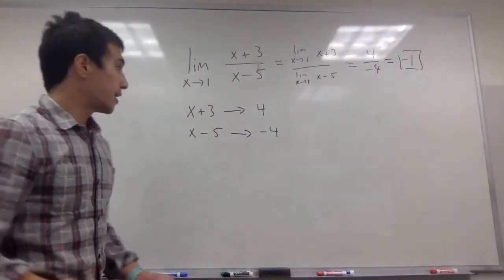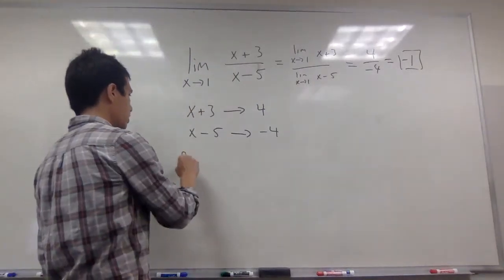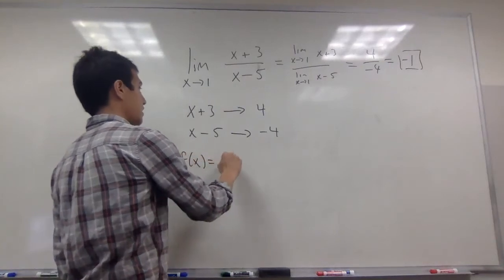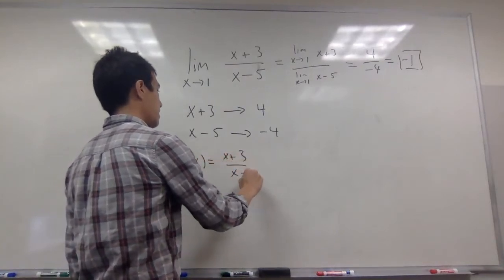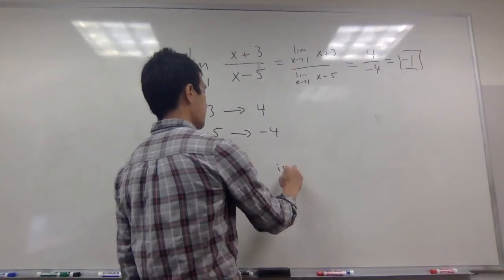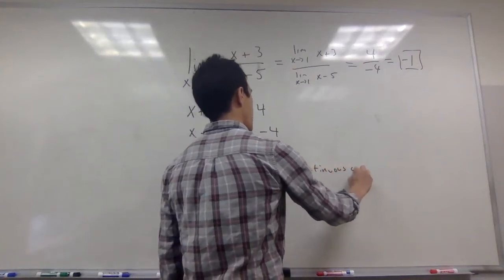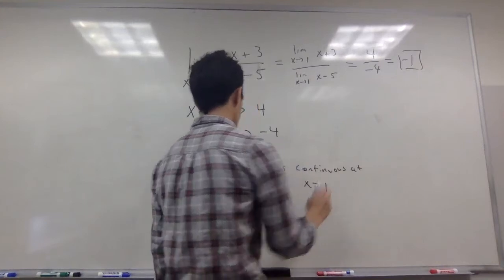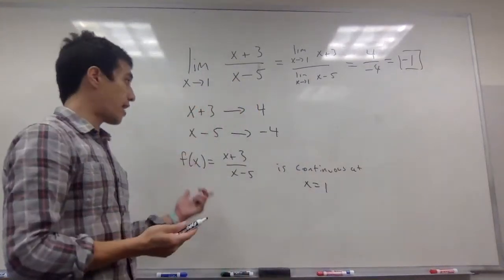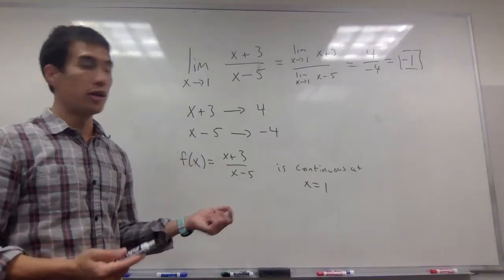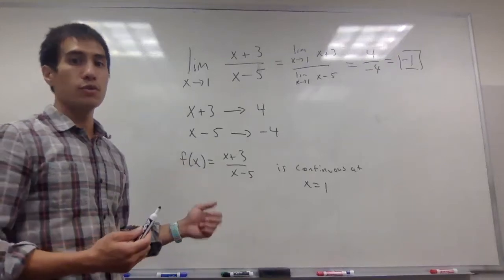Another way to see this is that if I consider the function f of x, which is x plus 3 divided by x minus 5, this function is continuous at x equals 1. If I look at the graph of this function and I were to graph it, I wouldn't have to pick up my pencil at x equals 1.